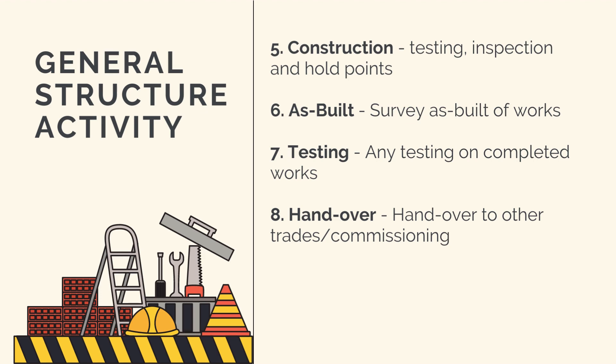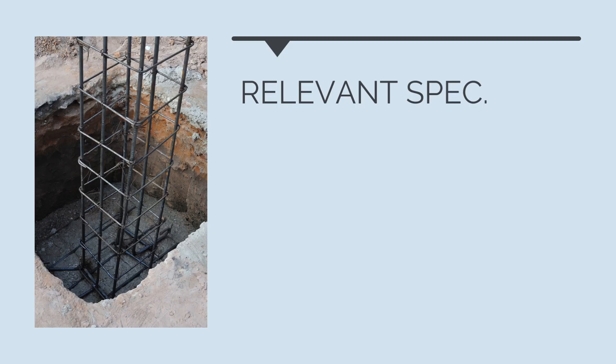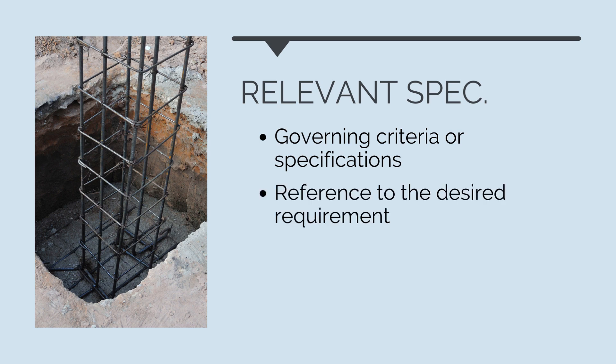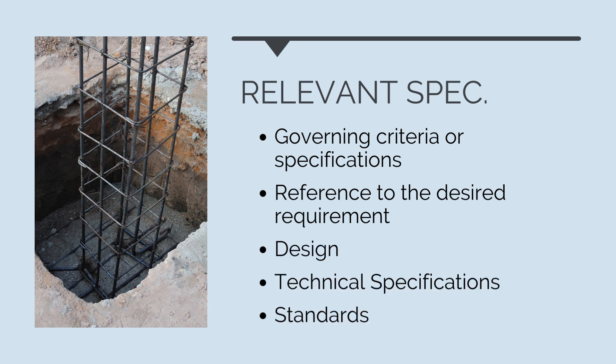As you can see, there's a lot more to any single activity than just the physical construction works. Once we've listed out all the activities, against each activity we'll need to know the governing specification or standard. This depends a lot on the works being undertaken — we want to identify the desired requirement we are trying to achieve and where this requirement comes from. For example, if our activity is excavation and we're completing a compaction test, where does the requirement for that compaction test come from and what result does it have to achieve? We need to note that down. These requirements could come from the design, a technical specification, or a governing standard.